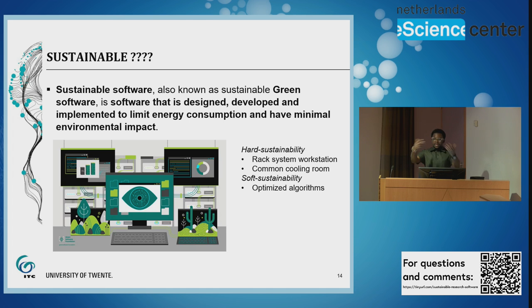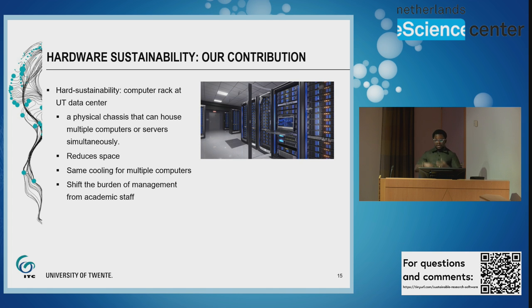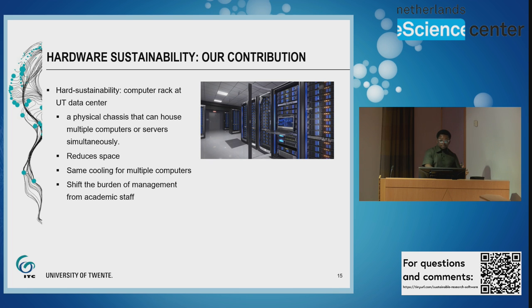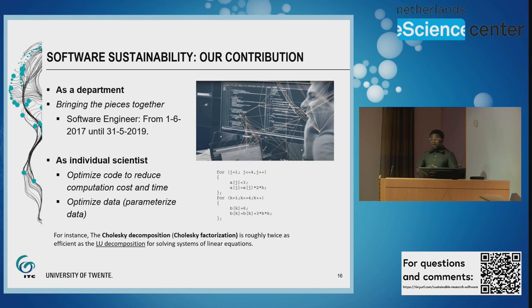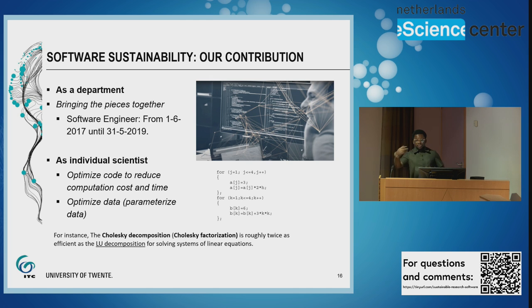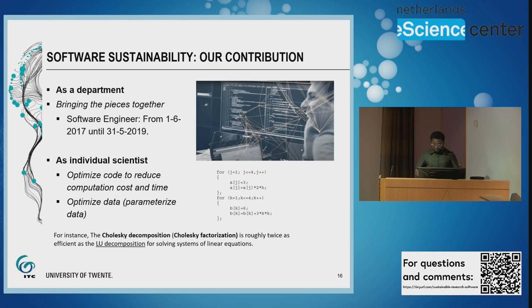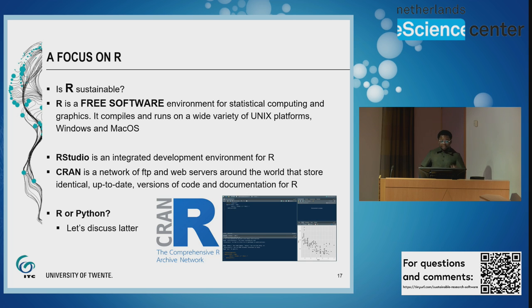R's availability through CRAN makes it sustainable for our purposes. Regarding what the department is doing to aid software sustainability: we look at both hardware and software. For hardware, our current investment involves placing our computers in the UT data center, so we don't have to invest in physical space or manage the computers ourselves. On the software side, for some time we had a software engineer whose main activity was to optimize the code and scripts we write to ensure faster processing, and we also advise our people to optimize their code, especially since we deal with a lot of matrix operations.